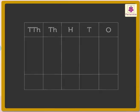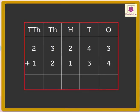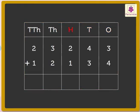Write the numbers 23,243 and 12,134 in the place value chart — that is, in the ones, tens, hundreds, thousands and ten thousands column.